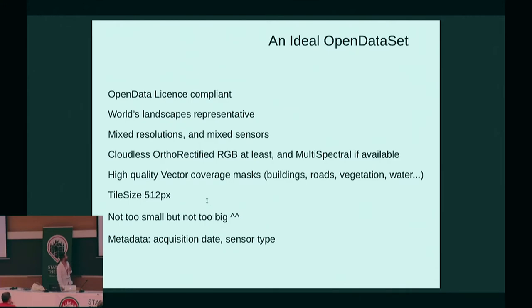As soon as you don't have a good training dataset, you cannot wait for a trained model on it. What could be an ideal open dataset? It has to be open data license compliant, a world landscape representative with mixed resolution and mixed sensor, RGB but not only, and coverage masks. It implies, for example, on roads, that roads are not encoded as a line string but as an area. From OpenStreetMap it could change, because as soon as you focus on the raster aerial imagery, your roads have to be encoded as a surface. The tile size has to be big enough. It could be nice to get the data of GeoJSON and the sensor type.